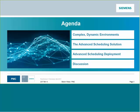We're going to talk about advanced scheduling solutions in general, and also we're going to touch on Preactor, which is Siemens' specific offering to address the need for advanced scheduling. Then we'll talk about advanced scheduling deployment — what's involved if and when a company chooses to go ahead with implementing the solution. And then we'll have a brief discussion.